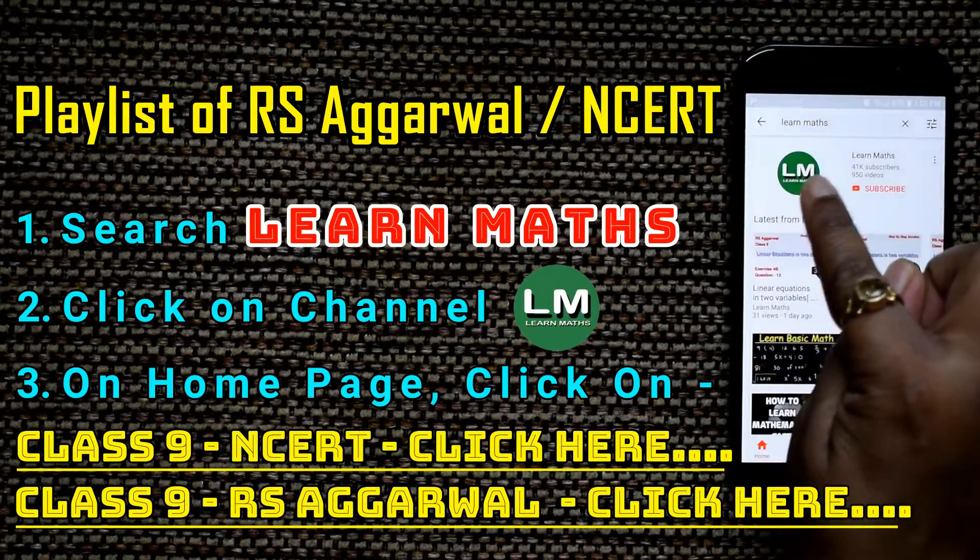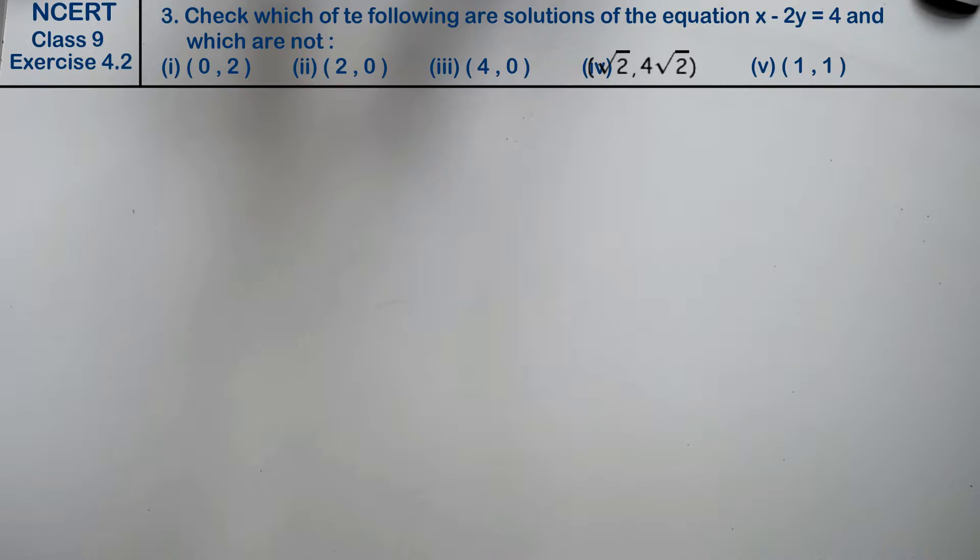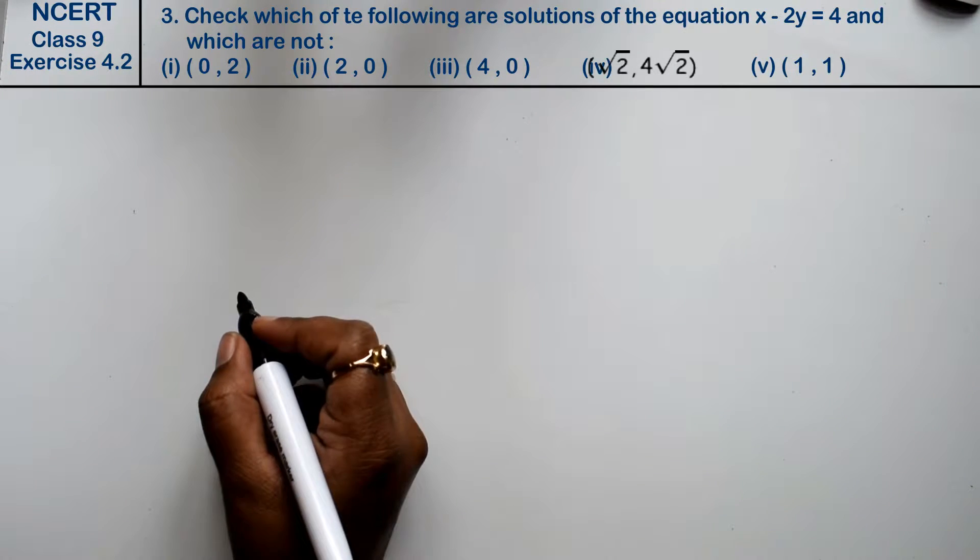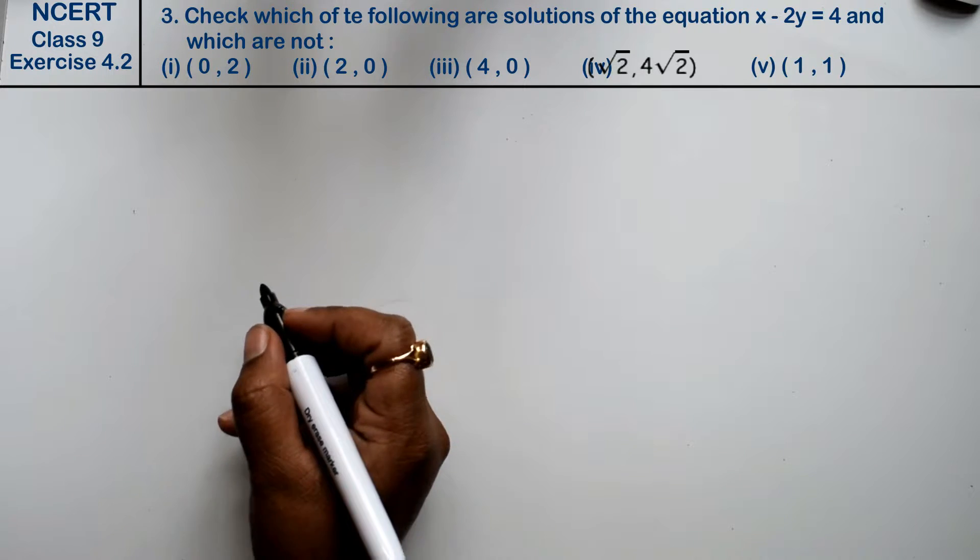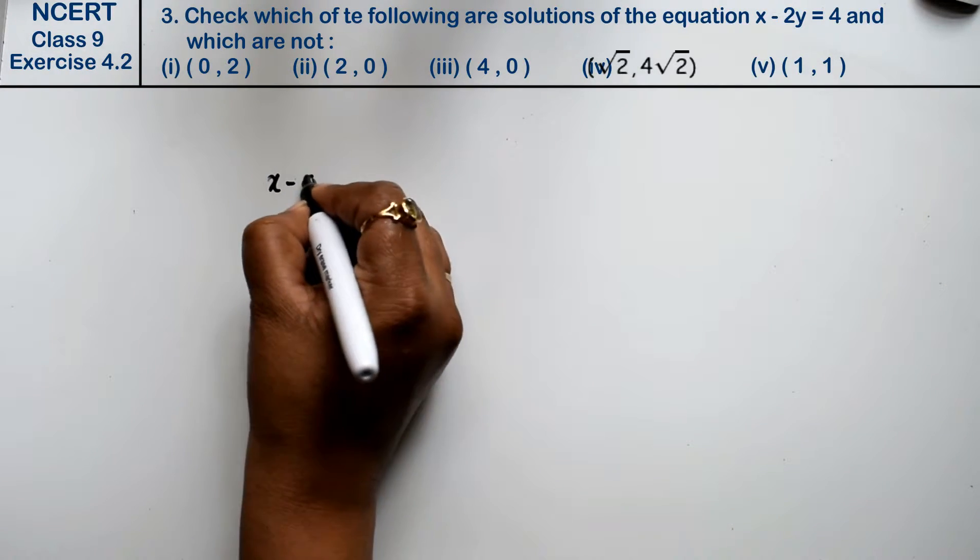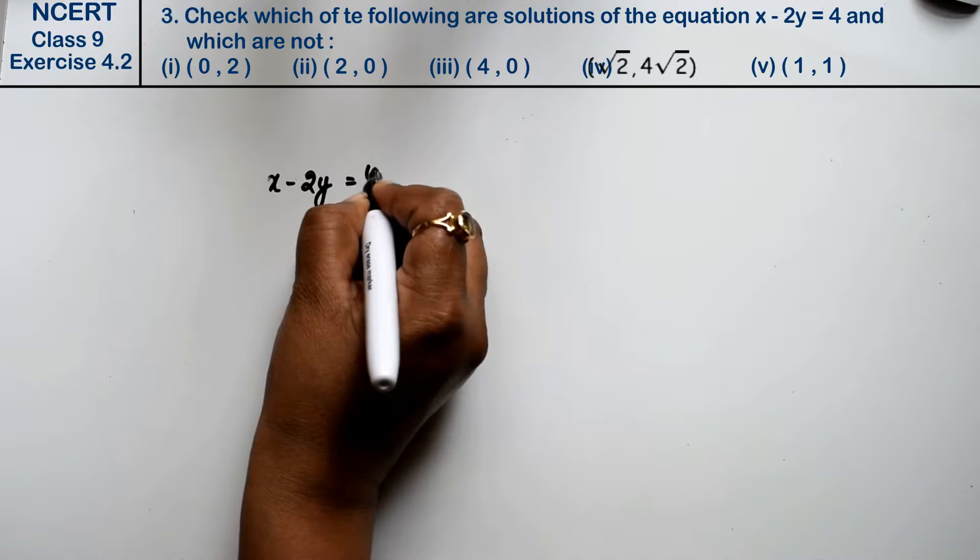Let's do question number 3 of exercise 4.2, linear equations in 2 variables. Question 3 is check which of the following are solutions of the equation x minus 2y equals 4 and which are not.